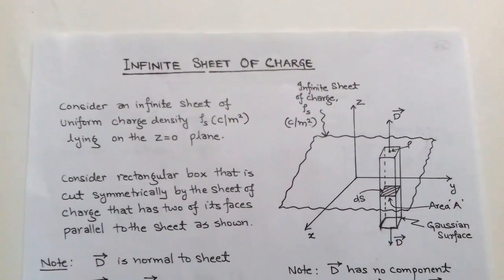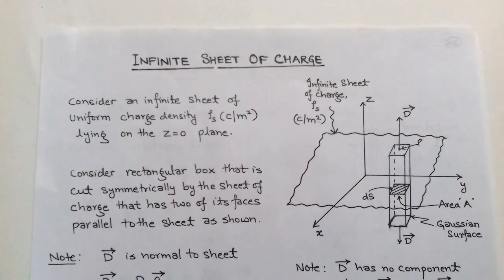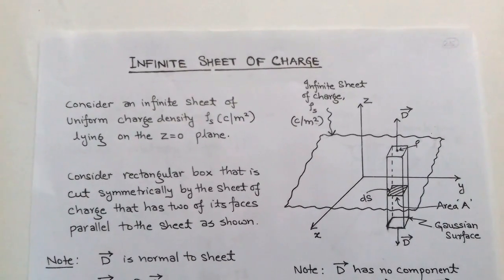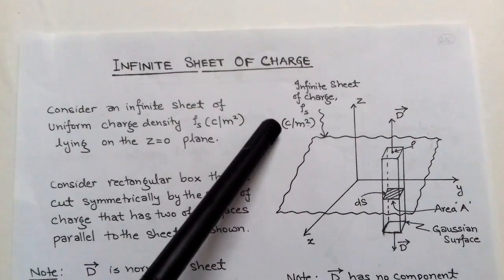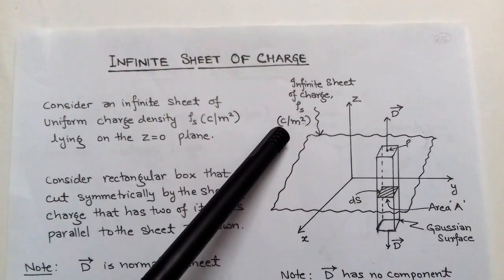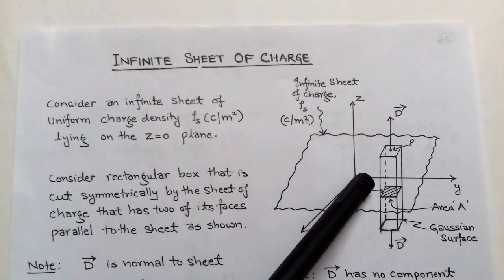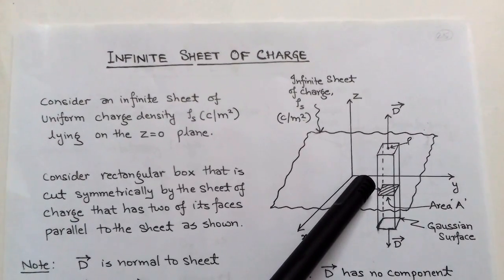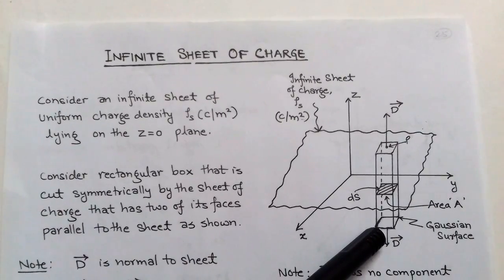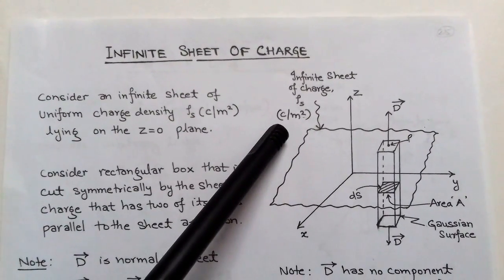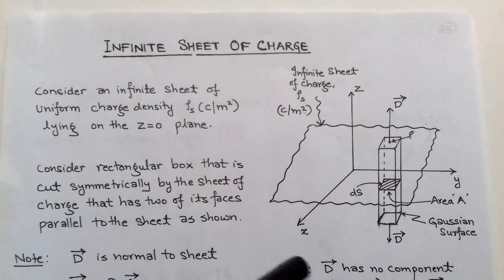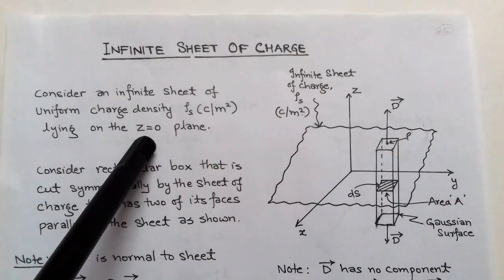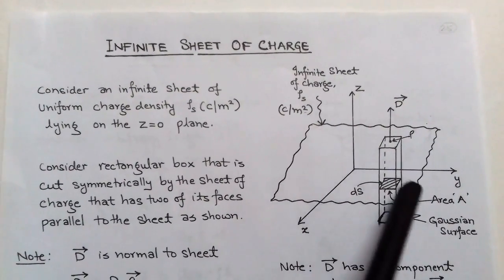Next is the infinite sheet of charge. Due to this infinite sheet of charge we calculate the electric flux density D using Gauss's law. The infinite sheet of charge has a uniform surface charge density ρs with units of coulombs per meter squared, and it is situated on the z = 0 plane, which is the xy-plane. We assume a Gaussian surface, which may be cylindrical or rectangular in shape.